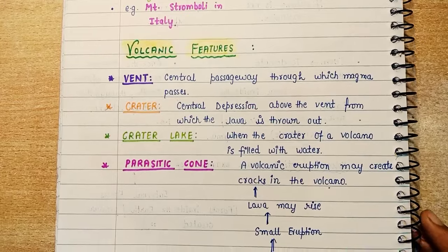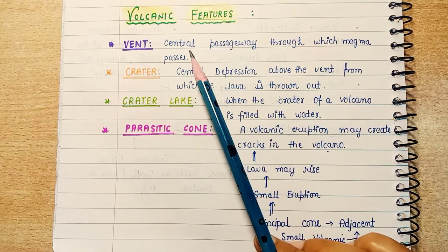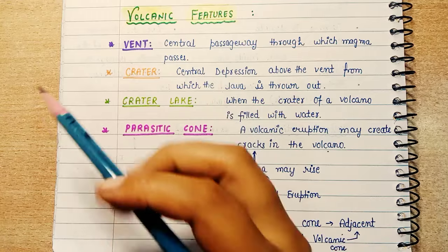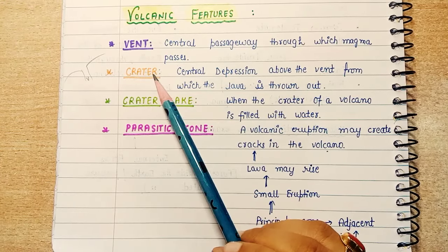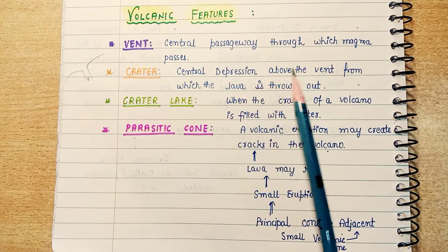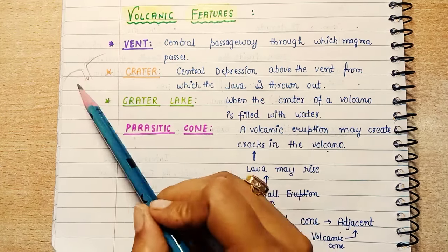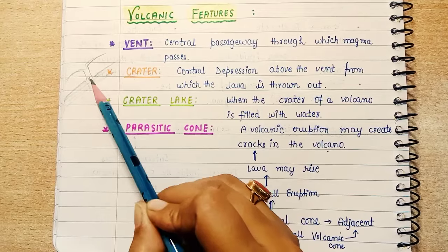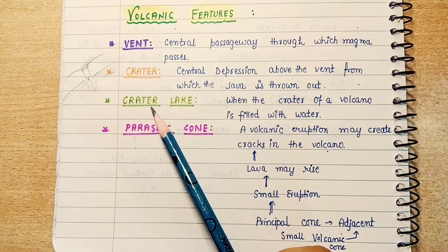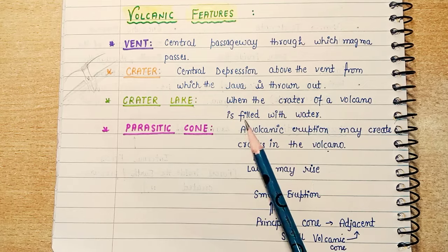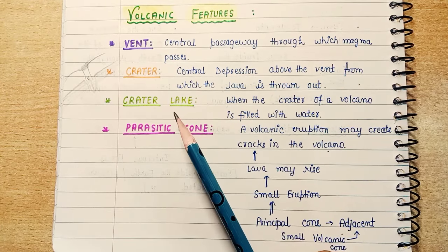Now let's read about volcanic features. First, the vent: it is the central passageway through which magma passes — the opening we already discussed. Next, the crater: it is the central depression above the vent from which the lava is thrown out. When the crater of a volcano is filled with water, it forms a crater lake.